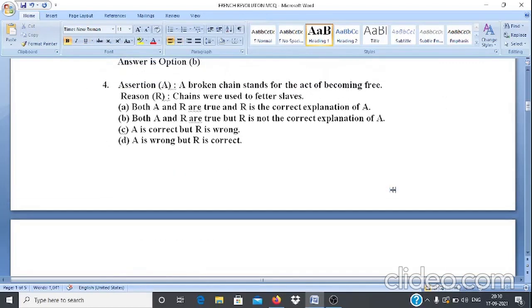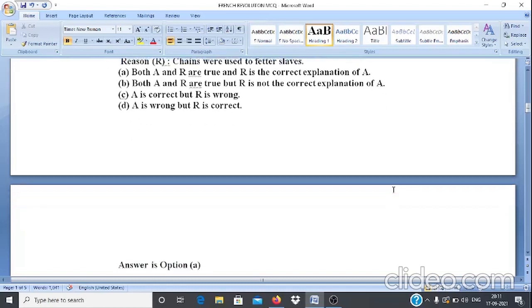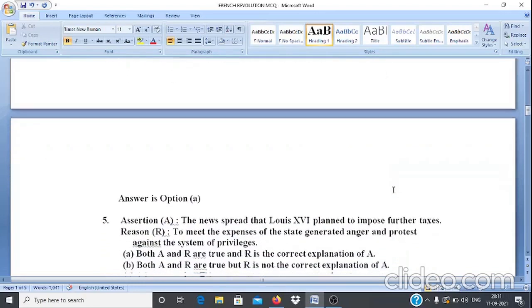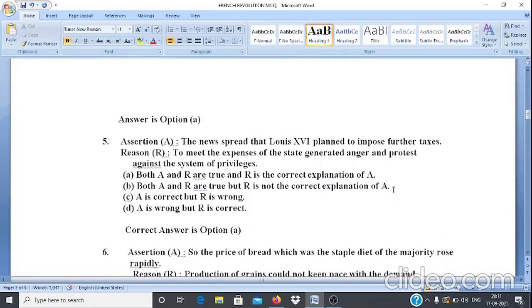Question 4. Assertion A: Broken chain stands for the act of becoming free. Reason R: Chains were used to fetter slaves. Here both the statements are true and reason is the correct explanation of A. That is why students will mark A as the correct answer.